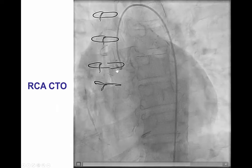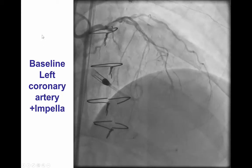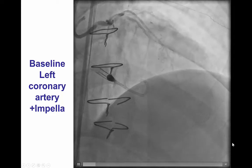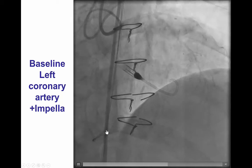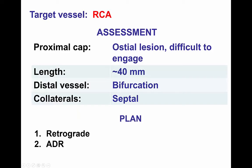Diagnostic angiography showed an osteo-occlusion of the right coronary artery. The left main was patent with competitive flow in the distal vessel of the LAD through the LIMA, and the posterior descending artery, distal and mid-right coronary artery, were filling retrograde via septal collaterals. We have an osteo-right coronary CTO that was difficult to engage during diagnostic angiography. The length was approximately 40 mm. There was a bifurcation on the distal cap, and the collaterals were from the LAD to the PDA septal collaterals amenable to retrograde. Given the osteo-occlusion, the plan was for a primary retrograde approach with potentially antegrade subintimal re-entry if the retrograde failed.